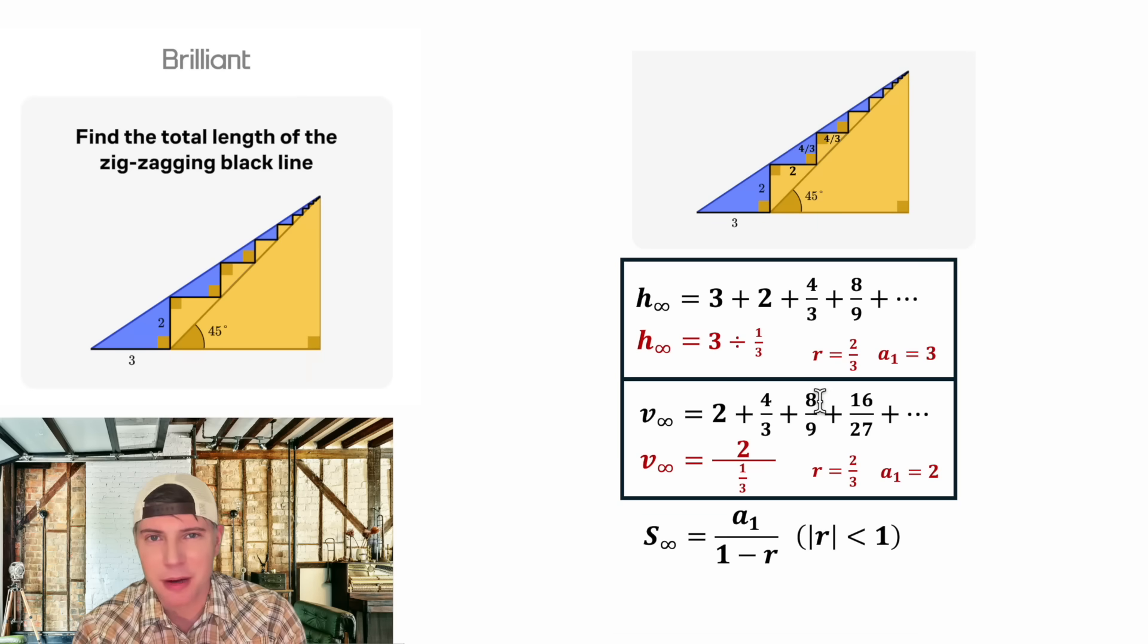And dividing by one-third is the same thing as multiplying by three over one. And same thing down here, this is two divided by one-third which we can rewrite like this and that's the same thing as multiplying by three over one. Three times three over one is equal to nine and two times three over one is equal to six.